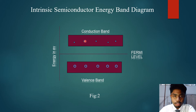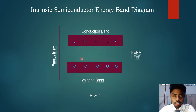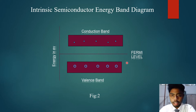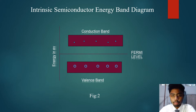This part is called the conduction band and this part is called the valence band. The number of electrons is equal to the number of holes. In between the conduction band and the valence band there is a level called the Fermi level. The axis represents energy in electron volt. We now turn to the next slide on extrinsic semiconductors.